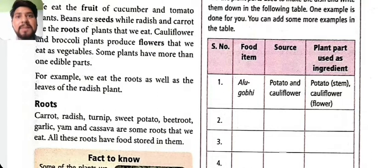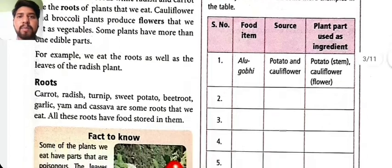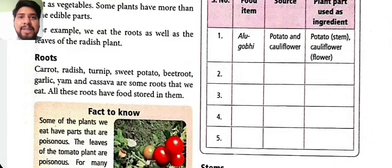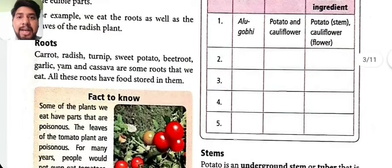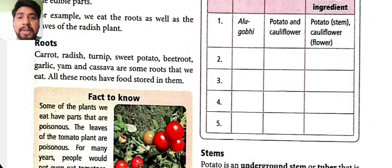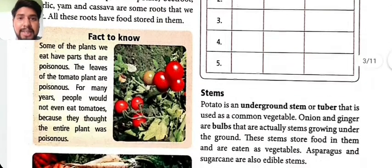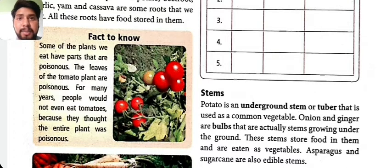We eat different parts of plants: flowers, roots, stems, fruits, and seeds. For roots, we eat carrot, sweet potato, beetroot, garlic, yam, and cassava. Interestingly, some plants we eat have parts that are poisonous. For example, the leaves of the tomato plant are poisonous — for many years, people would not even eat tomatoes because they thought the whole plant was poisonous.